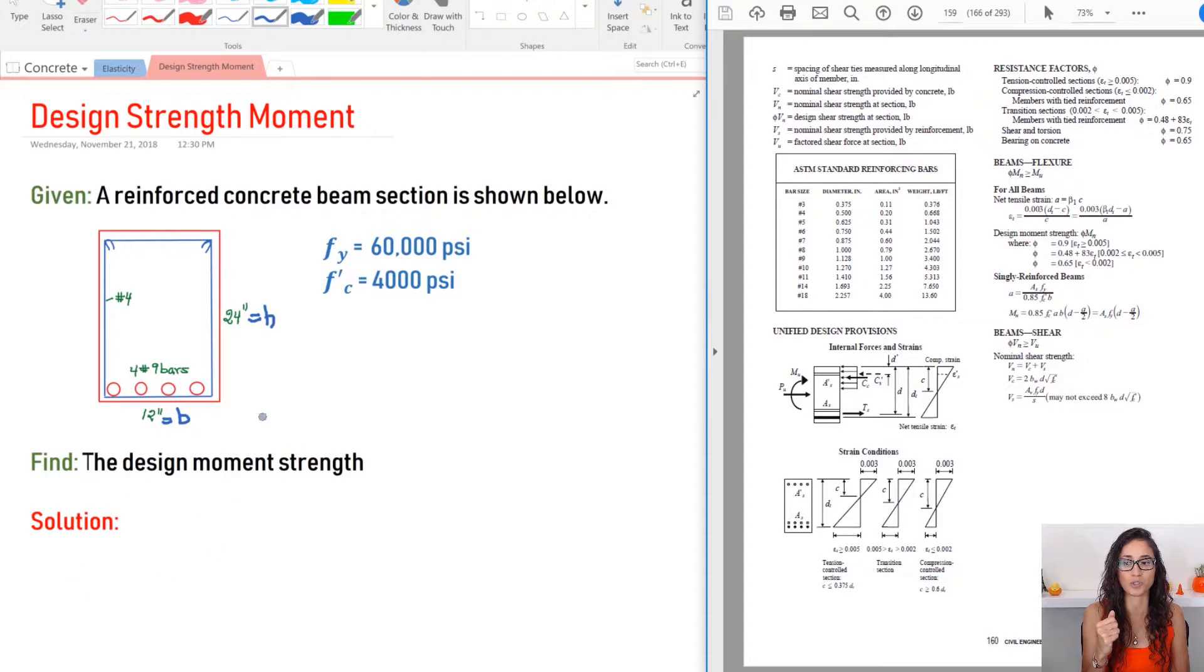Another thing is, we're going to calculate here for phi, so that we can find the design moment strength. However, in my FE exam, I was given phi is equal to 0.9, because I think it just takes a little longer to solve. And that's why it was just given to me. But I want to make sure that you guys know how to solve it. And this is why I want to solve it here.